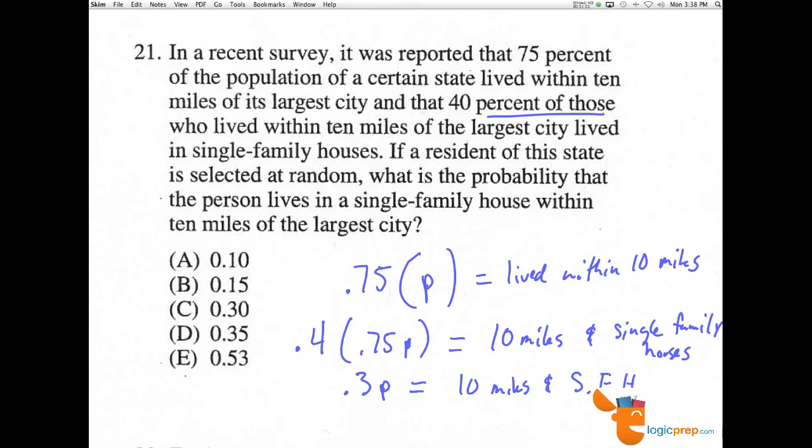The question says here, what is the probability that the person lives in a single-family house within 10 miles of the largest city? Well, here we say 30% of the people of this population live within 10 miles and are in a single-family house. So 0.3, 30%, is the probability.